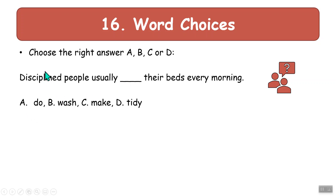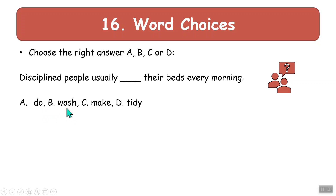Here's an example: 'Disciplined people usually ___ their beds every morning.' You have: do, wash, make, or tidy. Now, typically in Czech, do and make is one word — DELAT. So if you have do and make, it's usually going to be one of those two. It's a trick question — people think it's do, but actually it's make. 'Make your bed' is a collocation.